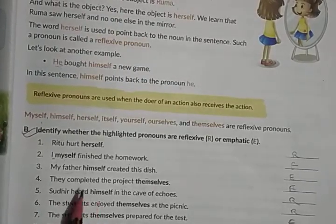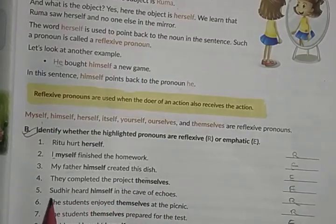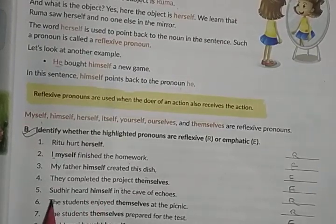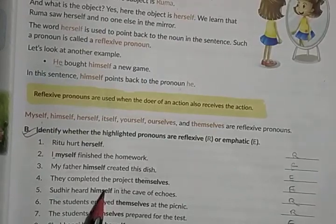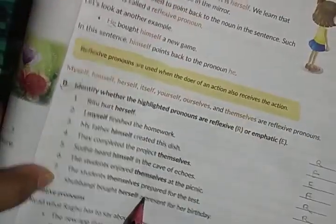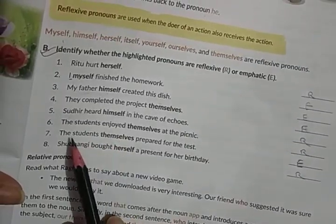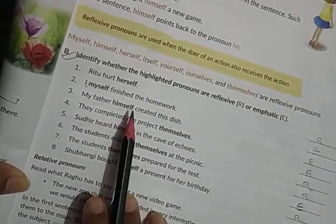'Sudhir heard himself in the cave of echoes.' Here 'himself' is pointing back to the noun Sudhir — turning back to the noun — so 'himself' will be reflexive pronoun. I have discussed questions one to five; there are eight questions altogether. Try the other questions and complete Exercise B in your copy.